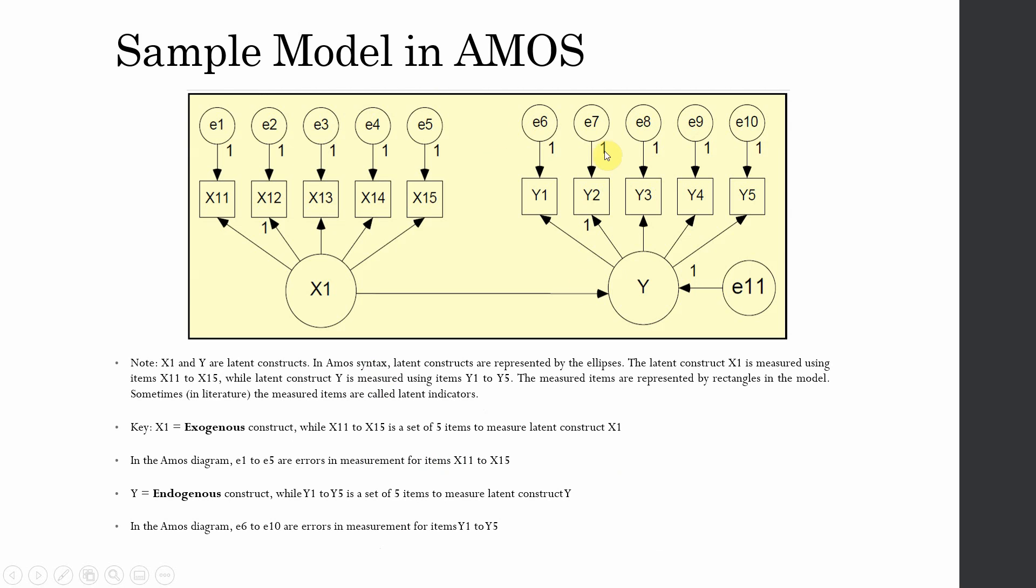This is a sample model in AMOS, where X1 is your independent variable and Y is your dependent variable. X1 is influencing Y. These are the indicators. Your X1 is your latent unobserved variable that is measured using these indicators, and these are the error terms for unexplained variance.